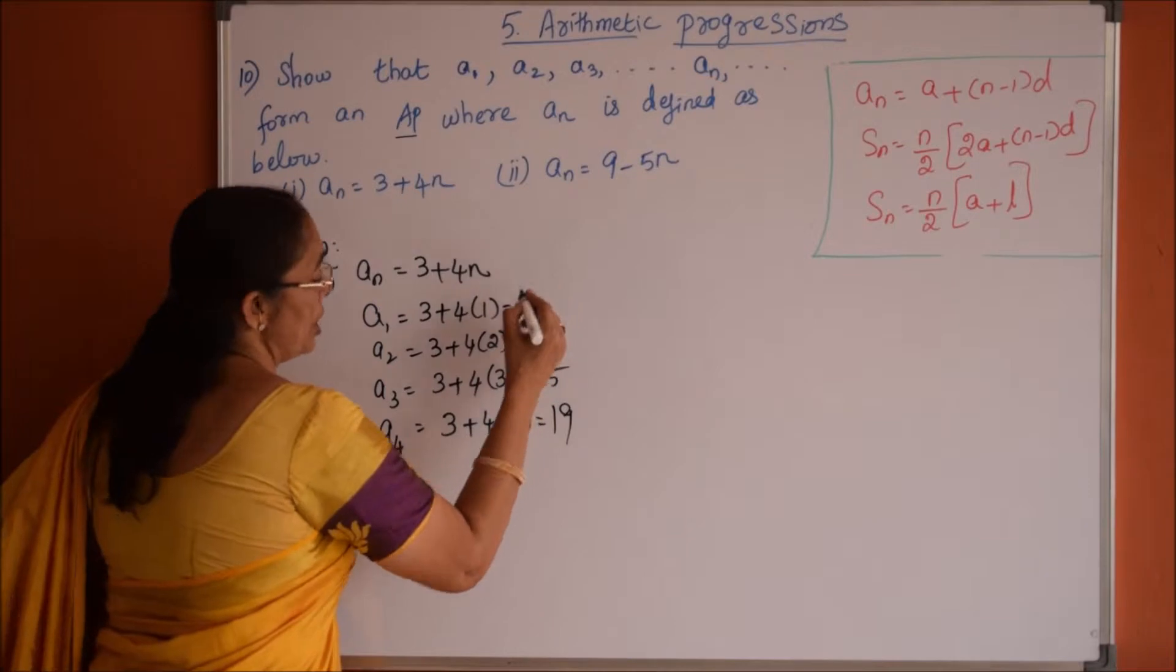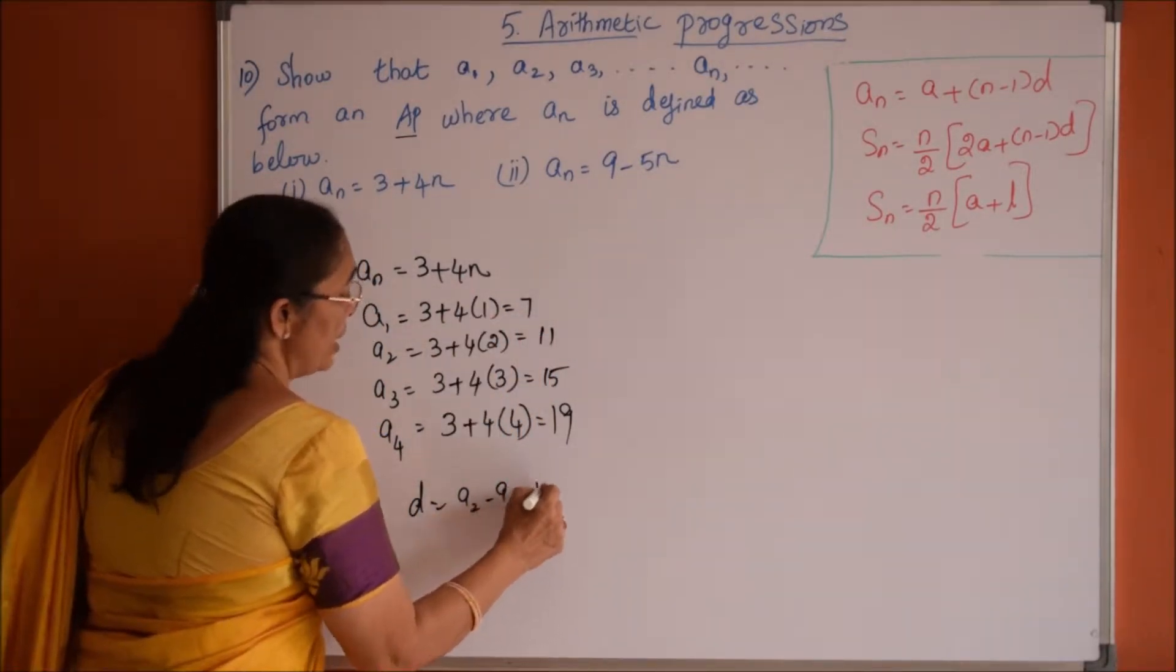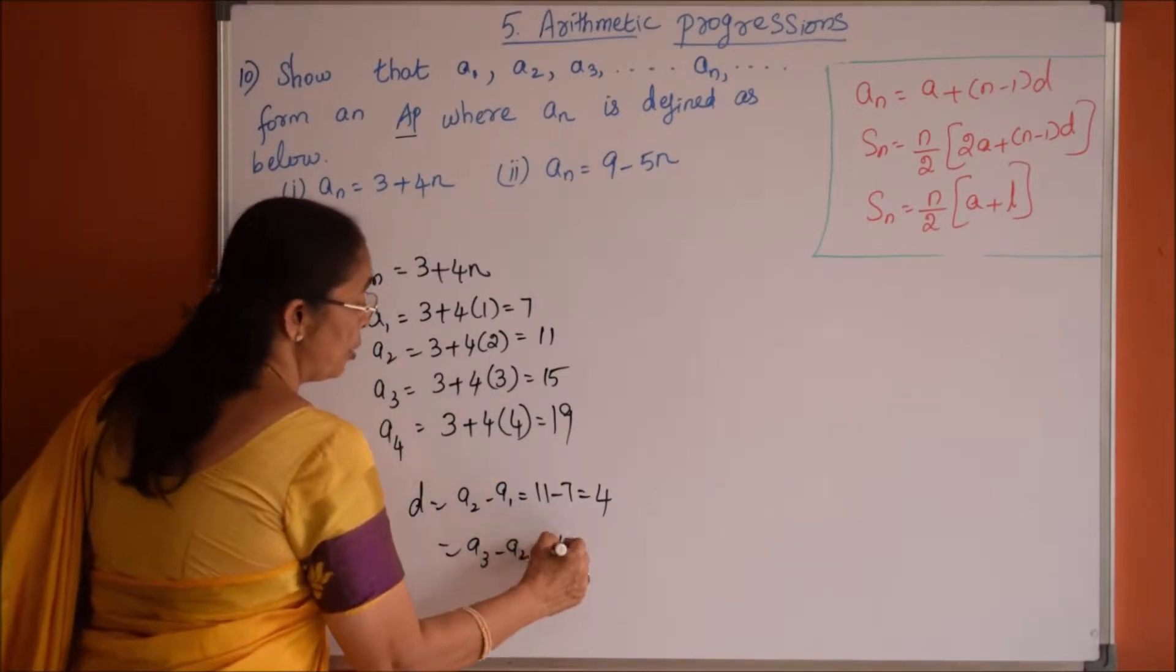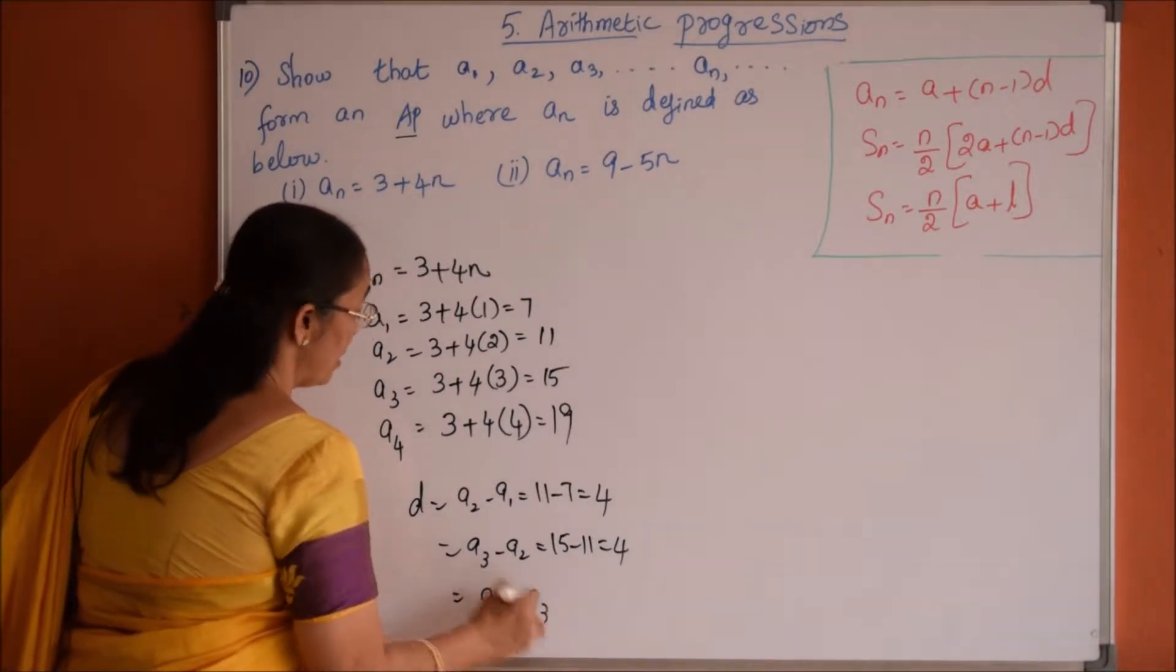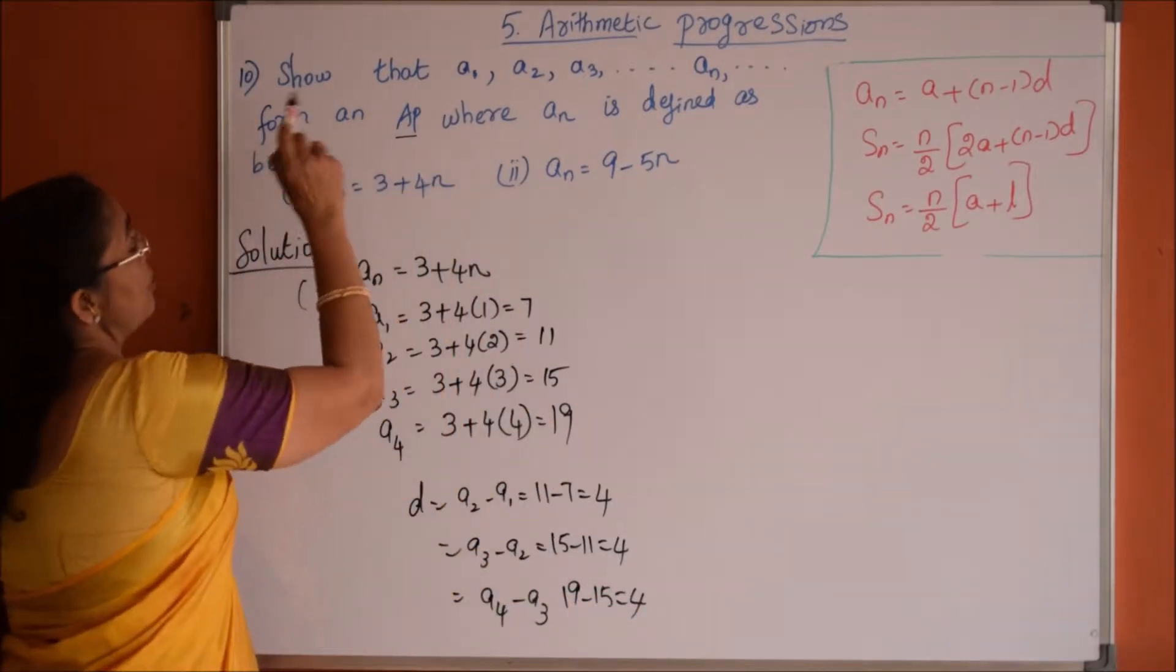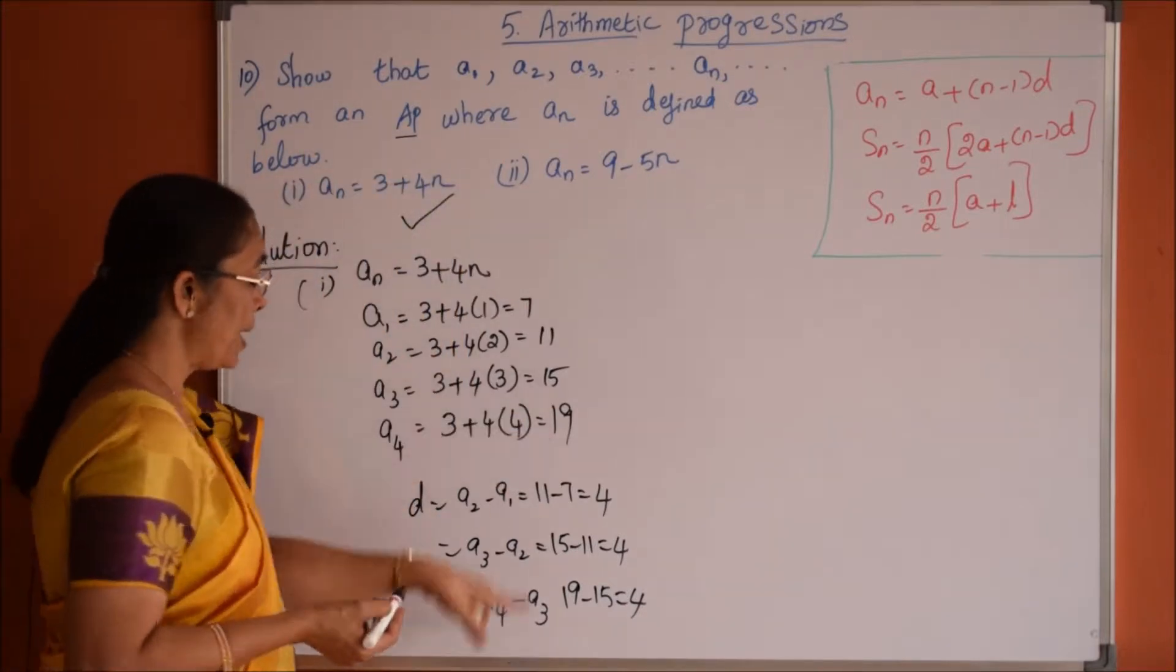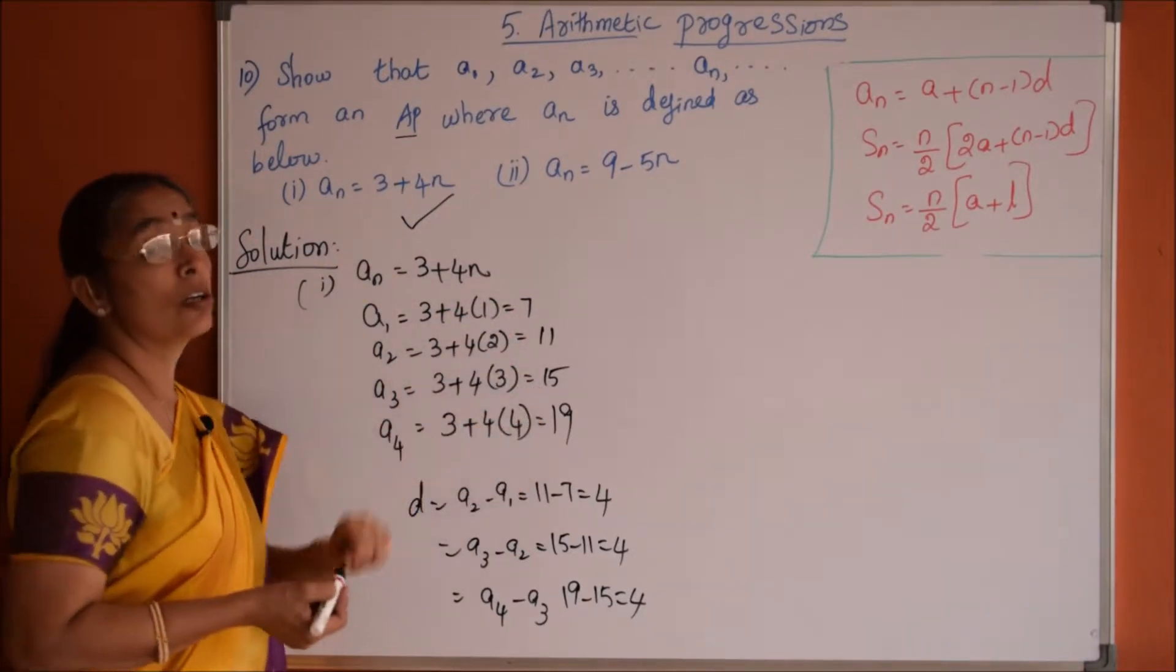So let us check now here. So the common difference a2 minus a1 is nothing but 11 minus 7, 4. And let me check for a3 minus a2, a3 minus a2 is 15 minus 11, 4. Again a4 minus a3, 19 minus 15, 4. So therefore the question is show that they are forming an AP. So this series a_n equals 3 plus 4n forms an AP because the list of terms 7, 11, 15, 19 are having common difference.